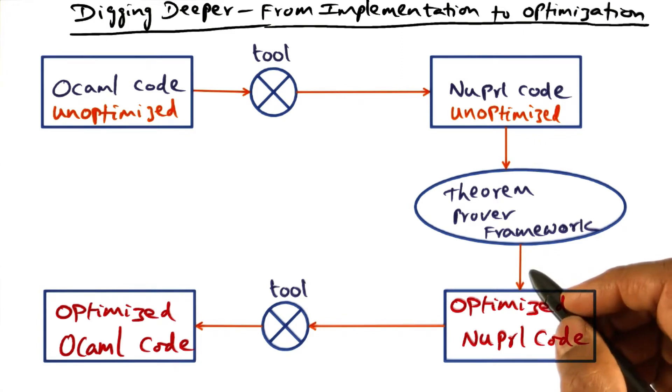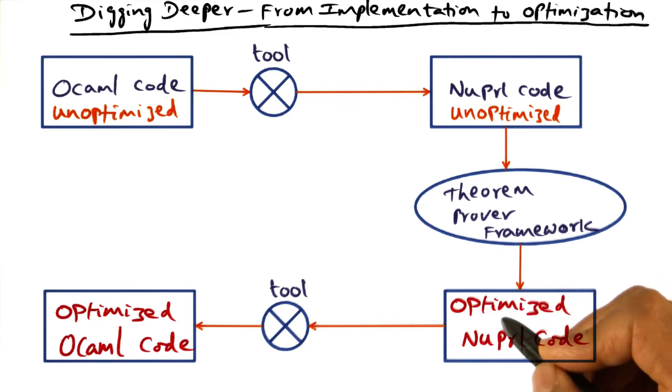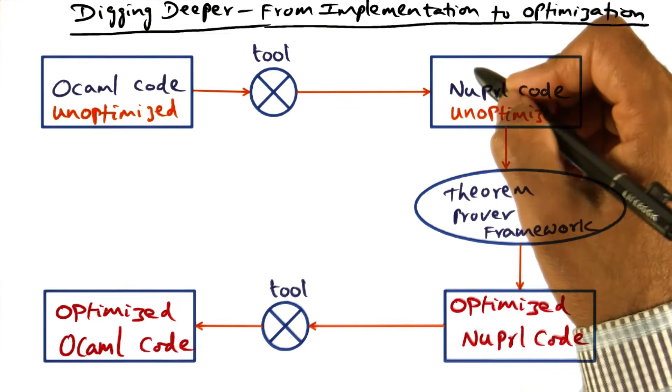The new PERL theorem proving framework is a vehicle by which you can make some assertions and prove some theorems about the equality of optimized and unoptimized code.